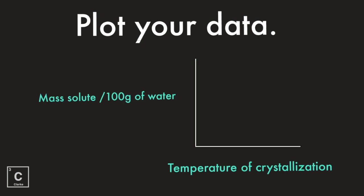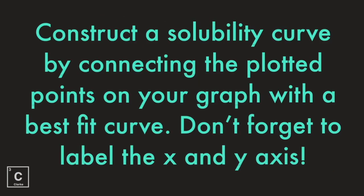One gram of water equals one milliliter of water — you can use them interchangeably. Construct a solubility curve by connecting the plotted points on your graph with a best-fit curve. Don't forget to label the x and y axes and give it a title. Make sure you're using a straight-line edge when you make your x and y axes.